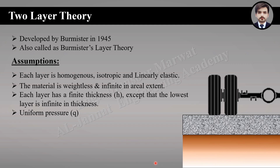One advantage of Burmister's theory is that it can be applied to a multi-layer system with any number of layers. He specified some assumptions: each layer is homogeneous, isotropic, and linearly elastic; the material is weightless and infinite in areal extent; each layer has a finite thickness except the lowest layer, which is infinite in thickness — that is, the subgrade. Also, the tire pressure on the surface is uniform.